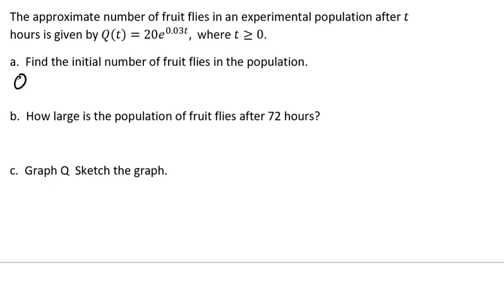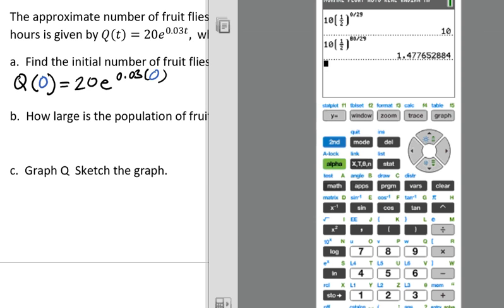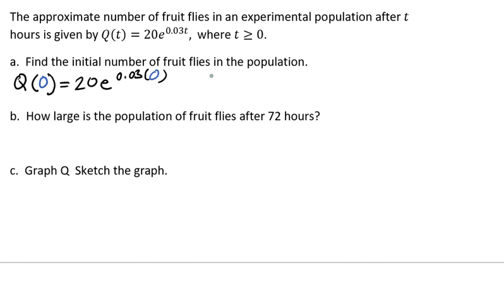We're going to find the initial number of fruit flies in the population. So that means when time is 0. When we have a time value of 0, what do we have? We're going to take our equation and plug in a 0 for our t. We'll pull up our calculator and plug that in: 0.03 times 0, and we're going to get a value of 20. So there are 20 initial fruit flies.